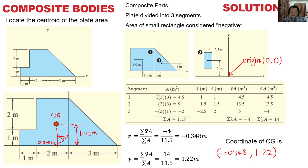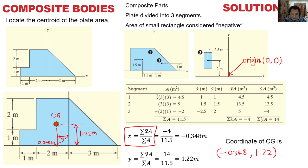To calculate the center of gravity for composite bodies, you need to find distance x-bar and y-bar using the formula: x-bar equals the summation of x times area divided by the summation of all areas. Similarly, y-bar equals the summation of y times area divided by the summation of all areas.